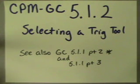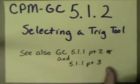Welcome to section 5.1.2. I'm not sure that there's a whole lot new that we're going to do in this section, but it is on selecting a trig tool. I went into that quite a lot in part 2 of 5.1.1 and did some examples of it in 5.1.1 part 3. On this one I'm just basically going to review it and show you three examples from this section.